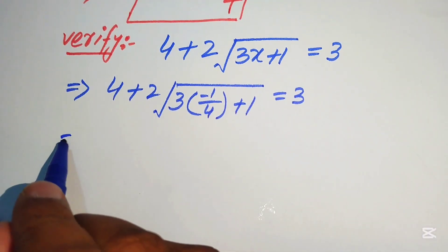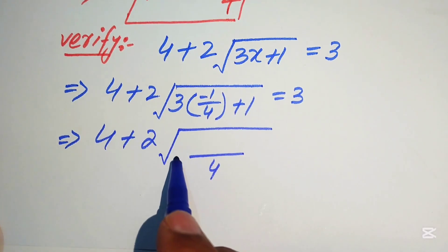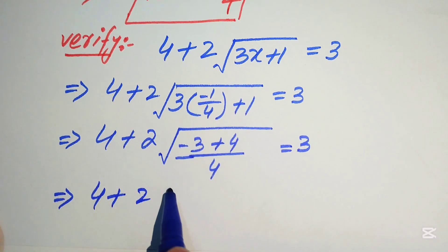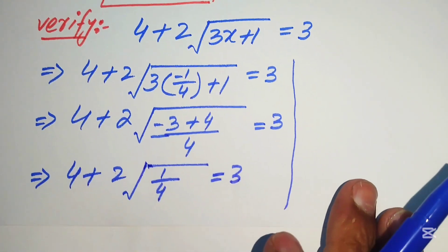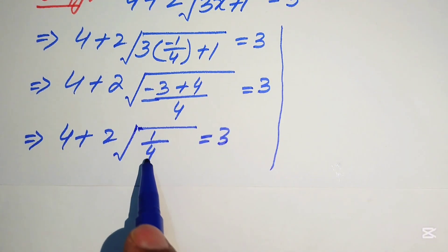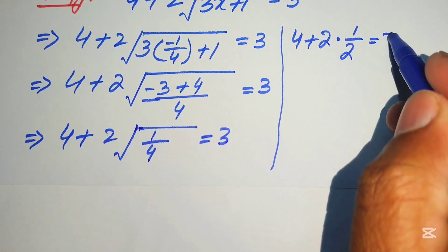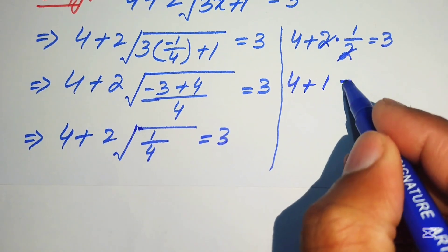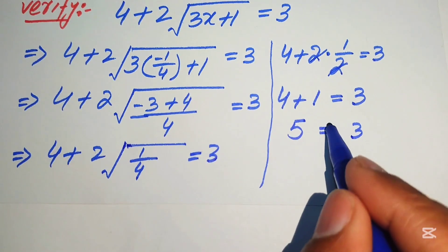Further simplification: we take the LCM, which becomes 4, and we get minus 3 plus 4 over 4 equals to 1 over 4 inside the radical. So we have 4 plus 2 into square root of 1 over 4 equals to 3. The square root of 1 is 1 and the square root of 4 is 2, so this becomes 4 plus 2 times 1 over 2 equals to 3. The 2s cancel, giving 4 plus 1 equals to 3. But 4 plus 1 is 5, and 5 is not equal to 3.